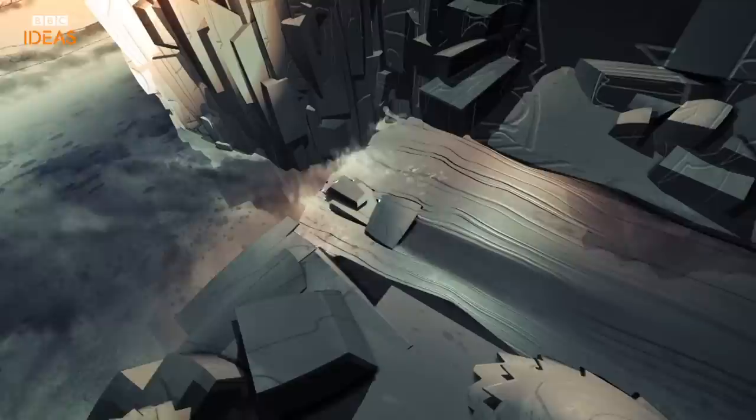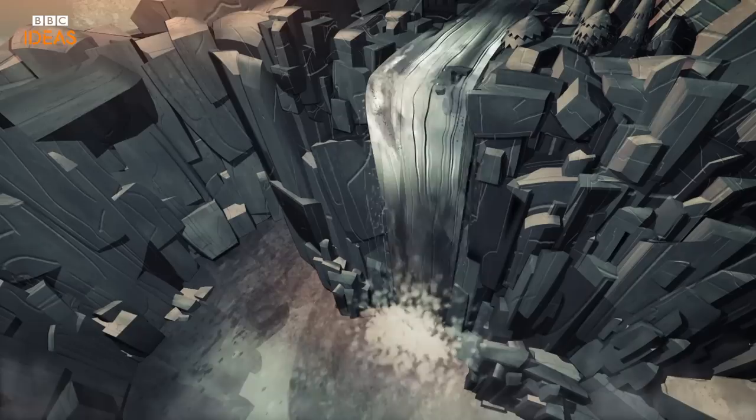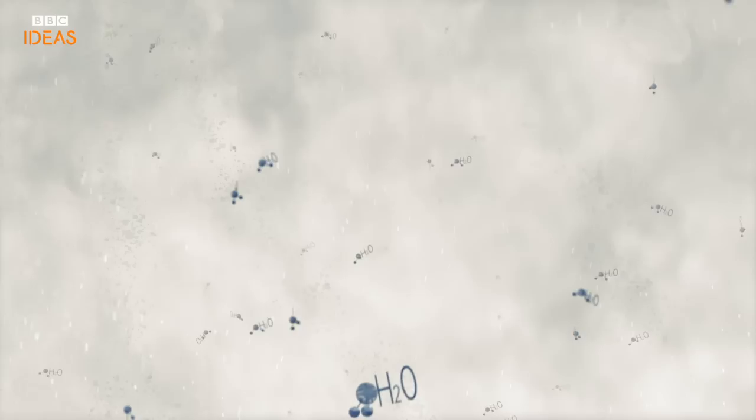Water doesn't follow the normal rules of chemistry. For a start, it shouldn't really be a liquid on our planet. A water molecule is made from two very light atoms, hydrogen and oxygen. And at the temperatures and pressures on the surface of the Earth, the rules of chemistry say that water should be a gas.